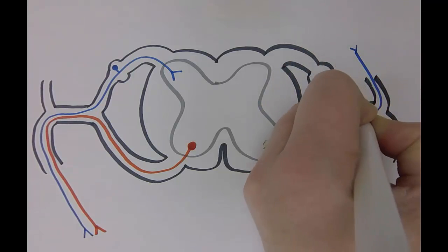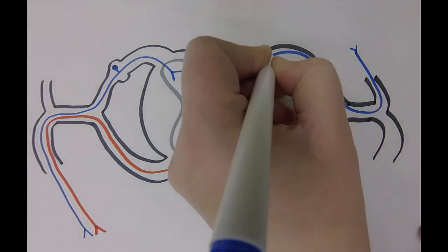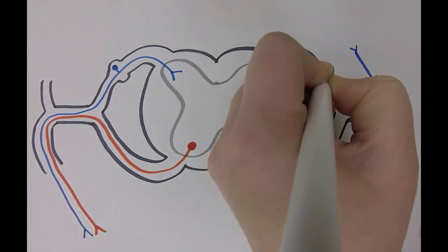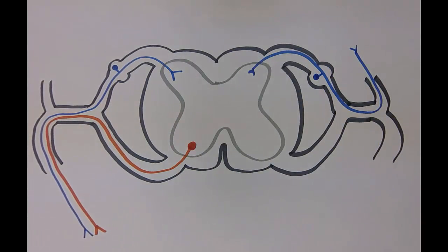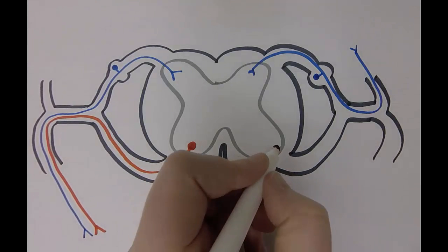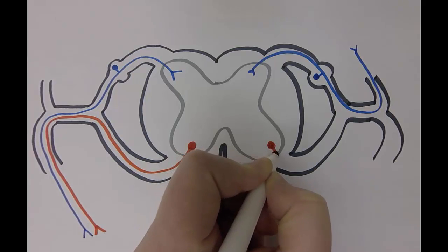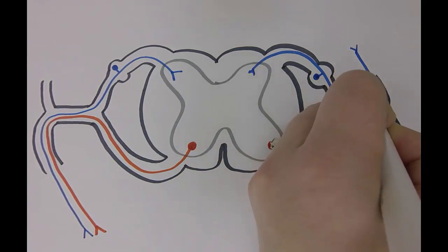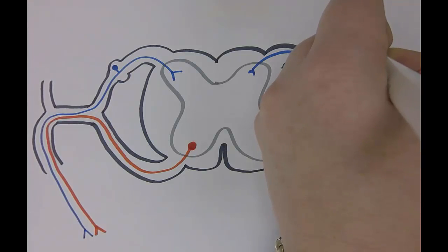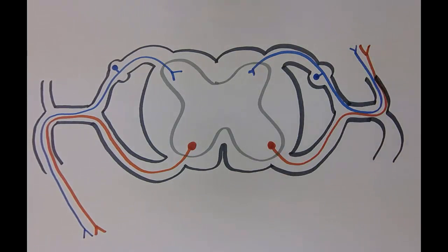On the opposite side, I'll draw in a sensory neuron from the back of the body, so from the skin on the back, for example. That again would take the dorsal primary ramus, spinal nerve and dorsal root. A motor neuron to supply a muscle in the deep back would take the same pathway to return.